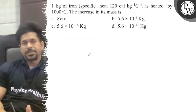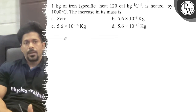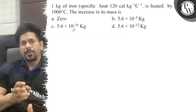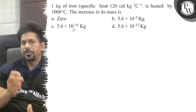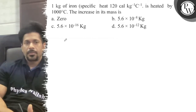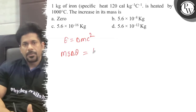Let's see the question: one kilogram of iron is heated by one thousand degrees Celsius — the increase in its mass is? Basically, the iron has mass one kilogram. The increase in mass comes from E = Δm · c². The energy supplied is Q = ms·Δθ, so ms·Δθ = Δm · c².